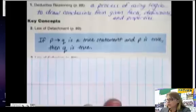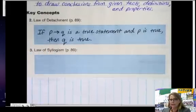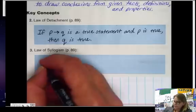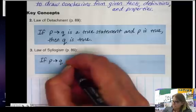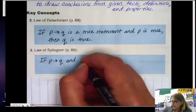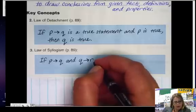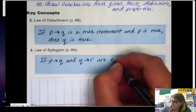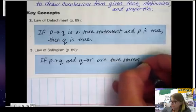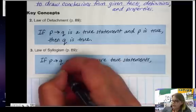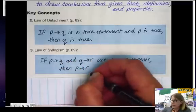So let's go over the law of syllogism. The law of syllogism is: if P arrow Q and Q arrow R are true statements, then P arrow R is a true statement.